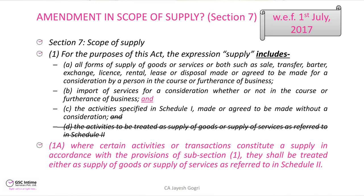A new subsection 7(1A) has been inserted in Section 7, which says that where certain activities or transactions constitute a supply in accordance with the provisions of subsection 1, they shall be treated either as supply of goods or supply of services as referred to in Schedule 2. This makes it abundantly clear that unless there is a supply of goods or services for consideration or business, or import of services for consideration, or activities defined in Schedule 1 without consideration — only these three would be considered supply.